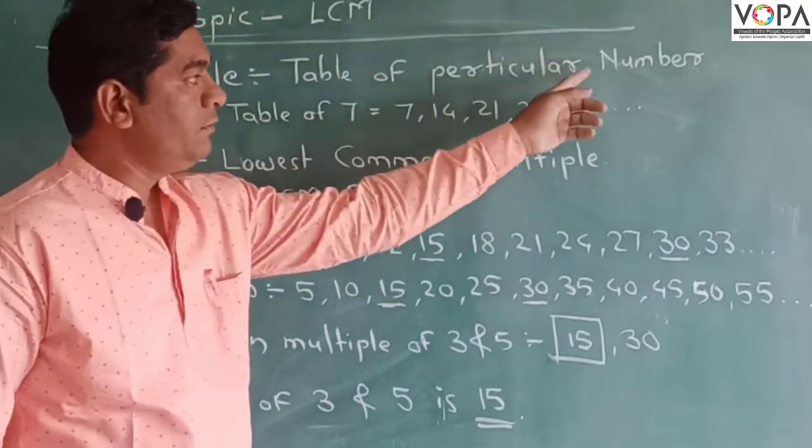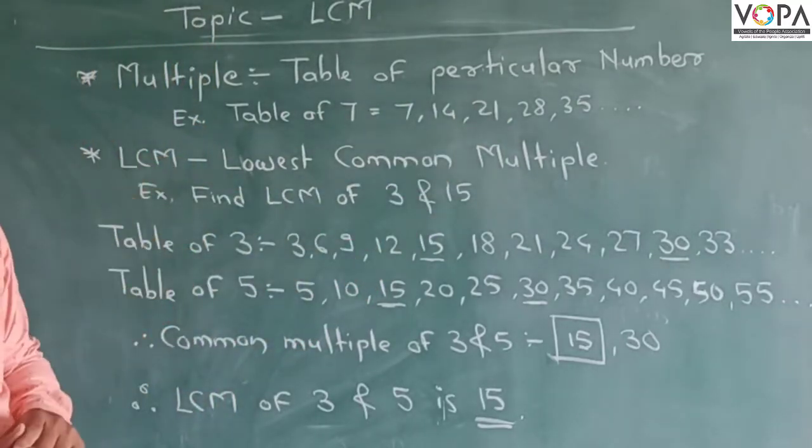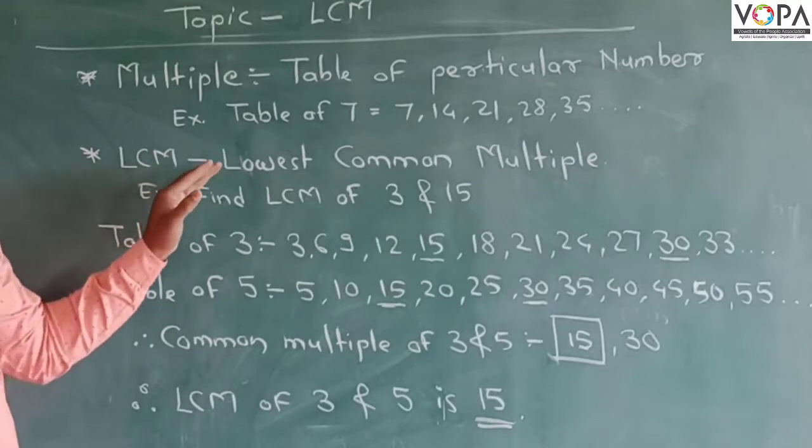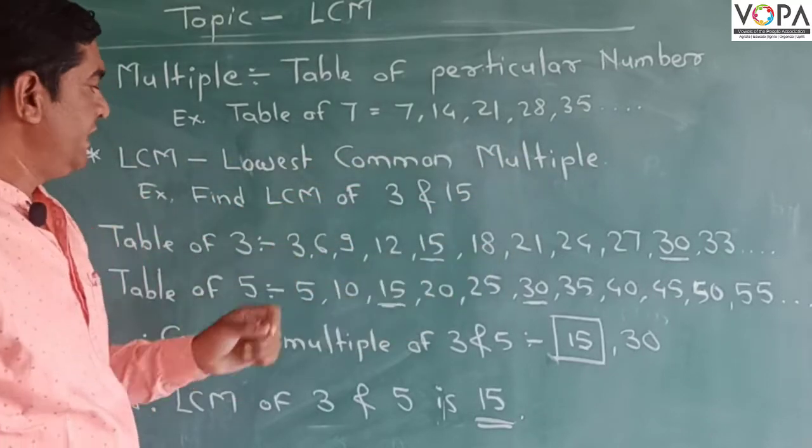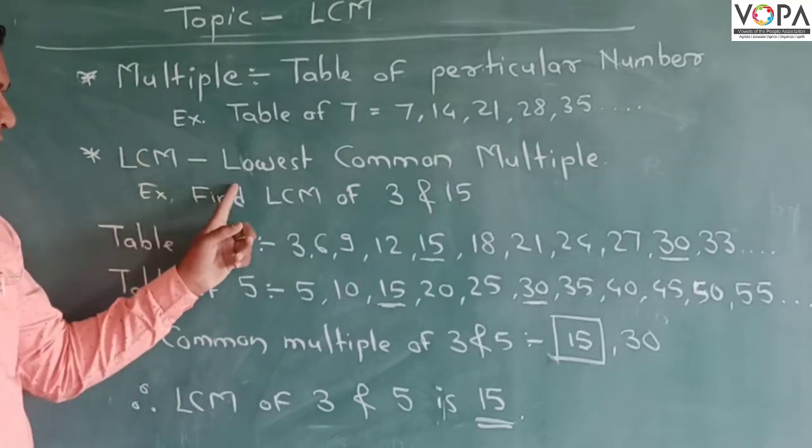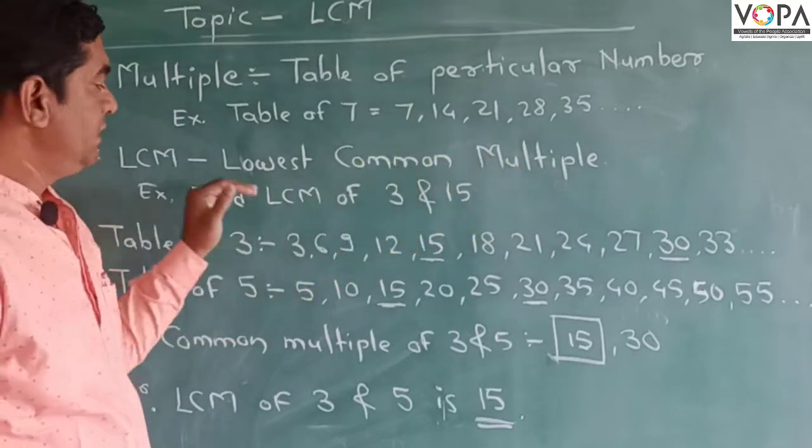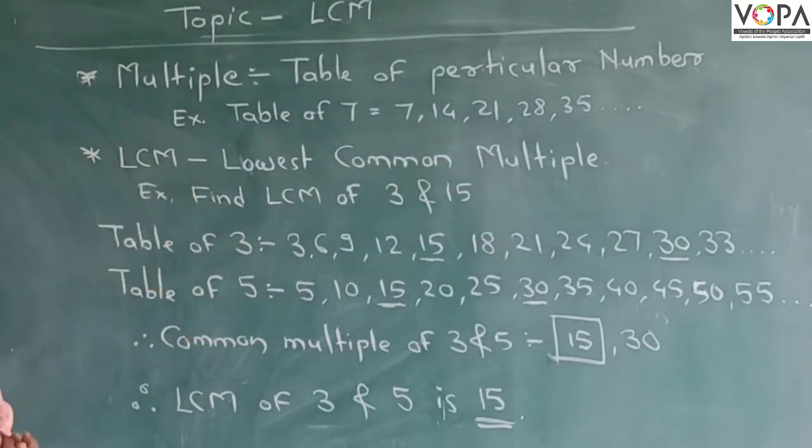So it is a basic requirement to find the LCM. What do you mean by LCM? LCM means Lowest Common Multiple. Once again, repeat the full form of LCM. LCM means Lowest Common Multiple, in short as LCM.